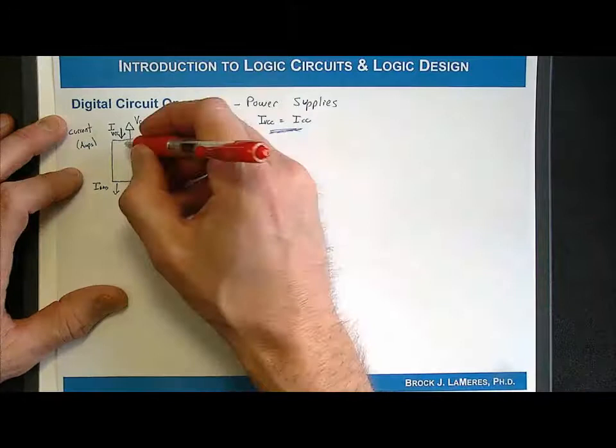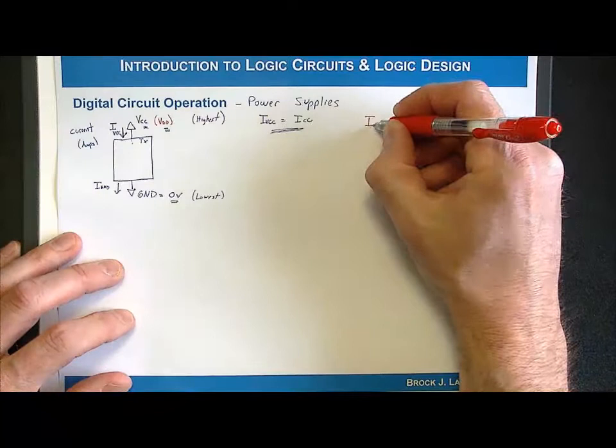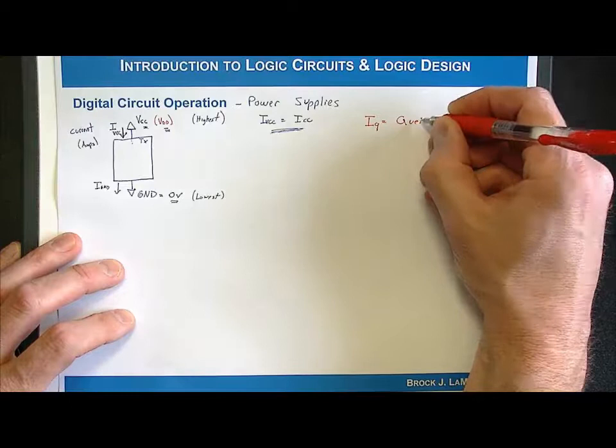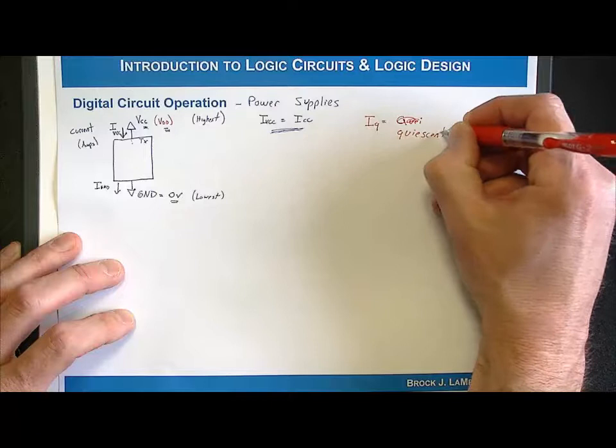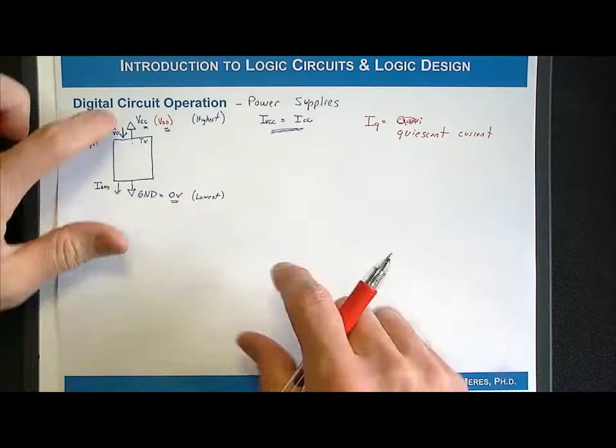The first component is the current used to make the digital circuit operational, called the quiescent current, denoted I_Q. The quiescent current represents the amount of current that flows into the device to keep the transistors within it operational — it's a steady, baseline current flowing even when nothing is switching on the device.